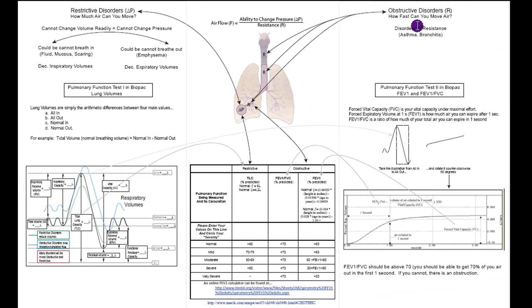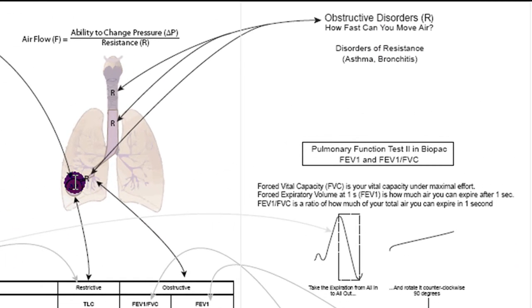And again, these are disorders of resistance. So you may be able to change the pressure just fine, but there's something resisting the flow. There's a decrease in the diameter of the airways, and that can happen in something like asthma, or you can have additional fluid lining the airways as in bronchitis. We're going to look at this by looking at pulmonary function 2 in the Biopac software.